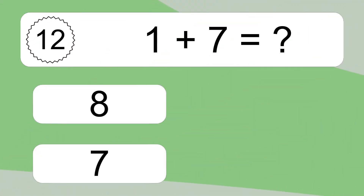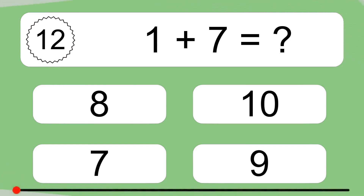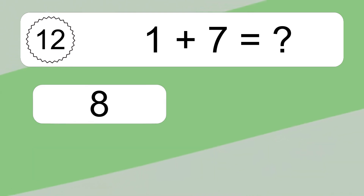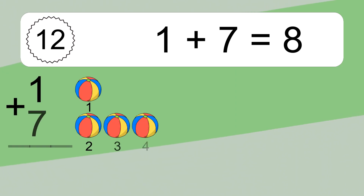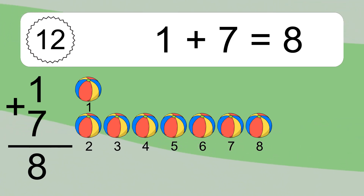1 plus 7 equals what? 1, 2, 3, 4, 5, 6, 7, 8. Let's count it. 1, 2, 3, 4, 5, 6, 7, 8.